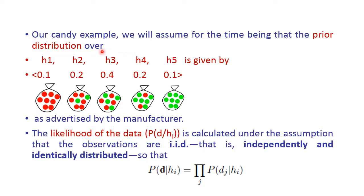First we see the prior distribution over all the candy bags. The manufacturer produces five types: h1 is 100% cherry with prior probability 0.1; h2 is 75% cherry and 25% lime with probability 0.2; h3 is 50% cherry and 50% lime with probability 0.4; h4 is 75% lime and 25% cherry with probability 0.2; and h5 is 100% lime with probability 0.1. This is the prior probability of all candy bags.